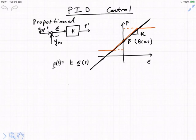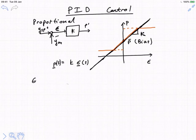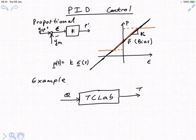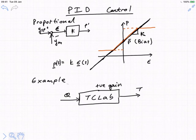I find it's easier to remember the direct and reverse acting terminology when you refer to the direction in which the measurement is moving. If we think about our temperature control loop with the TC lab, the manipulated variable is such that increasing Q will tend to increase T — so this system has a positive gain.